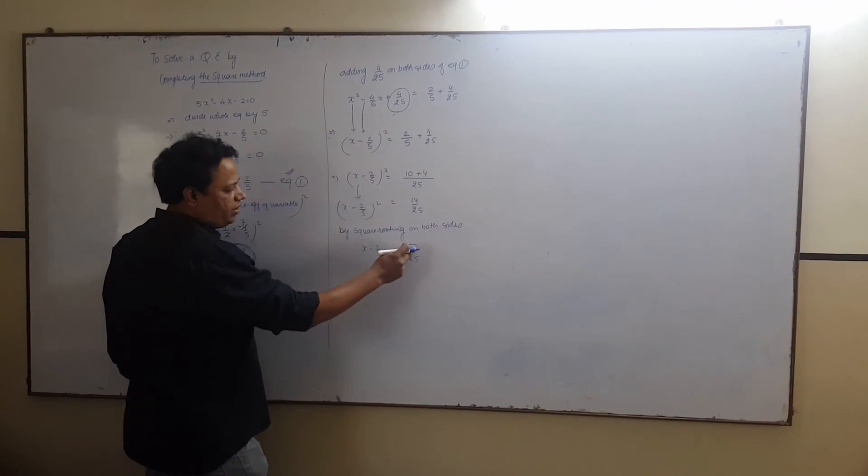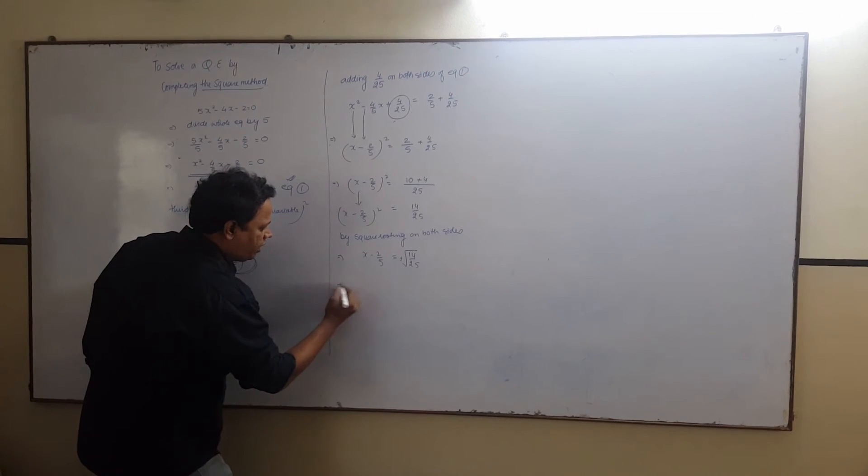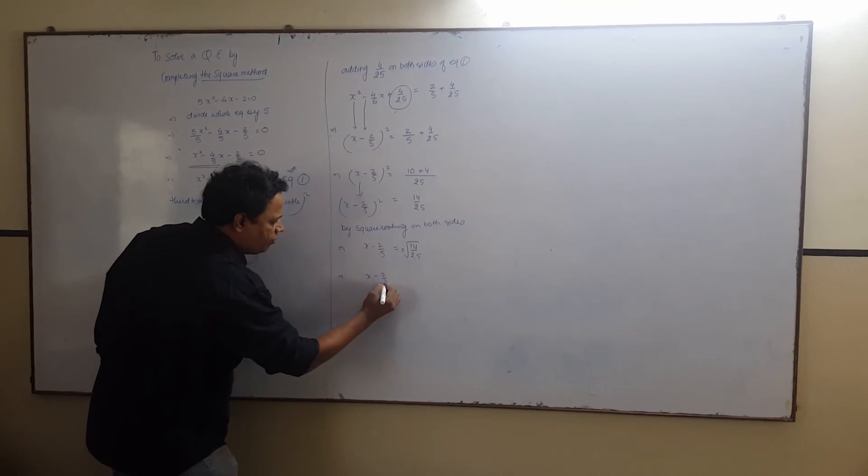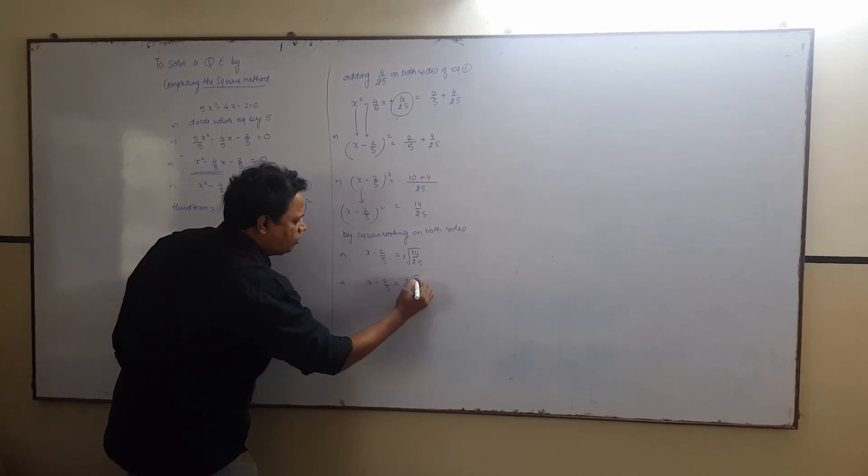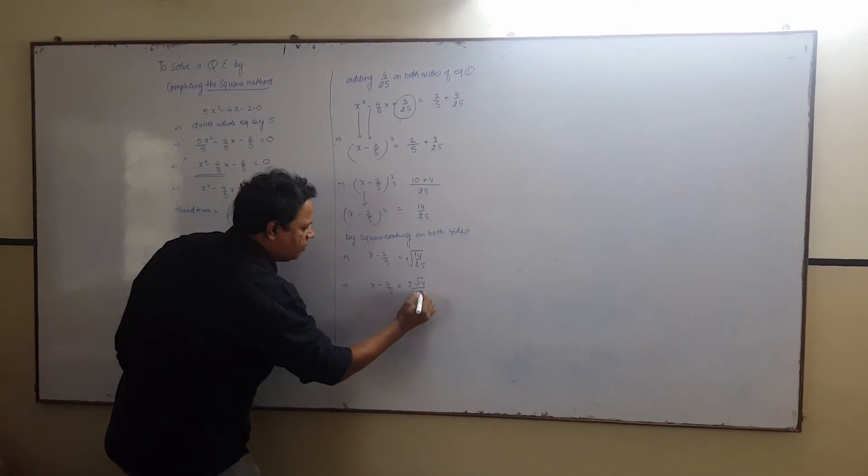So, what I will get, x minus 2 upon 5 equals to, plus minus root 14 upon 5.